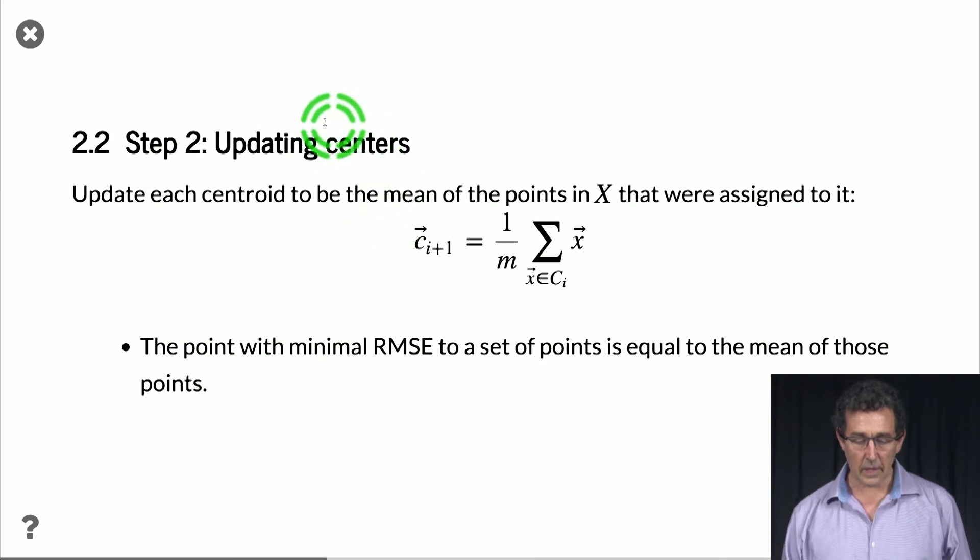The second step has to do with the mean being the best centroid for a set. So you can basically easily show that for any fixed set of examples, the subset that is associated with a particular centroid, the best centroid is to take the mean. So basically, this is also a step that is not going to increase the RMSE.